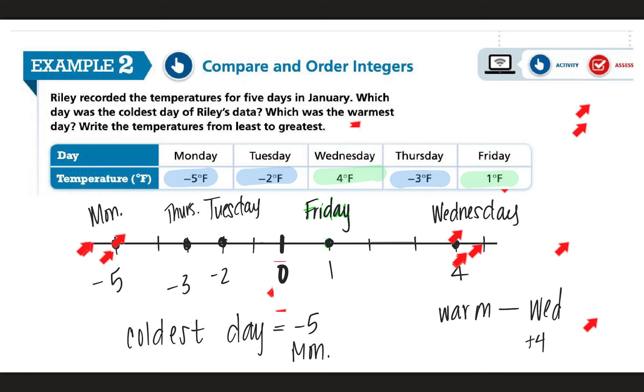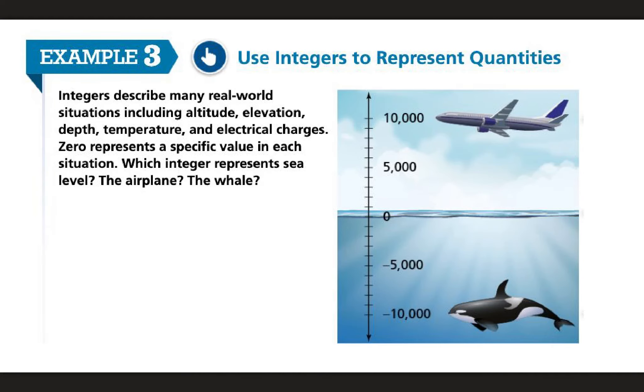There's our answer. So having a number line really helps us to see which is the furthest, which is the warmest, you know, which is the furthest this way and which is the furthest this way can help us interpret data a lot faster when we have a model to look at. All right. Example number three, integers describe many real world situations, including altitude, elevation, depth, temperature, and electrical charges. Zero represents a specific value in each of these situations.